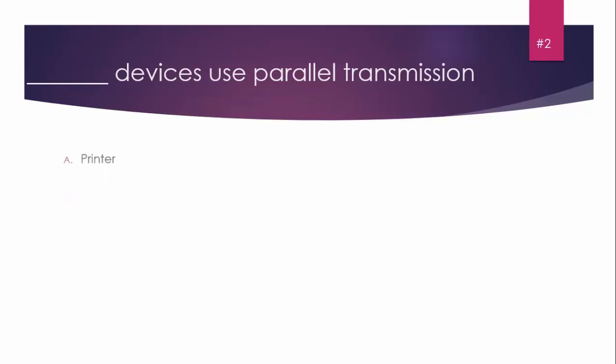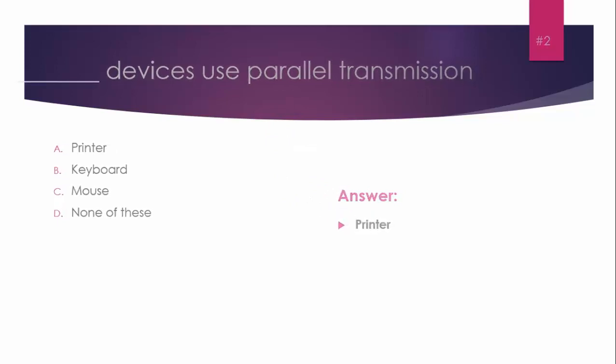MCQ number two: Blank device uses parallel transmission. Options: A) Printer, B) Keyboard, C) Mouse, D) None of these. Answer is Printer, because printer is a machine that uses parallel transmission, meaning multiple bits are transferred at one time.